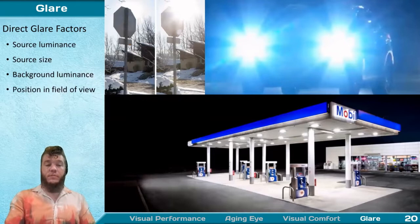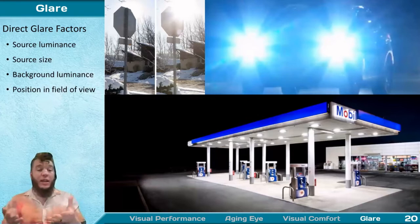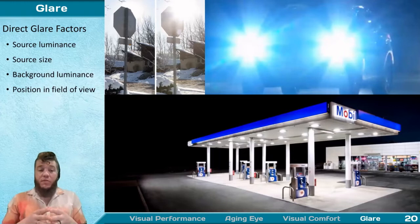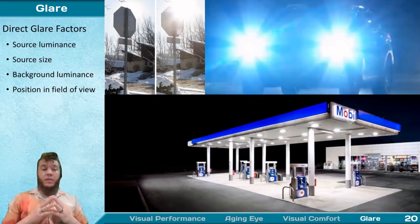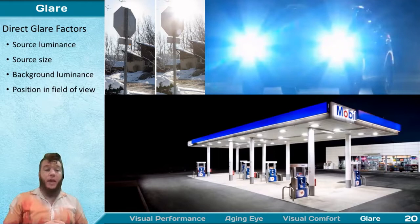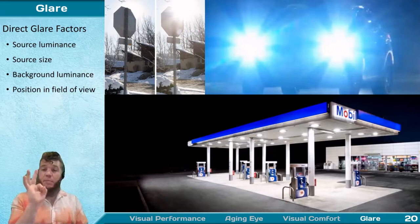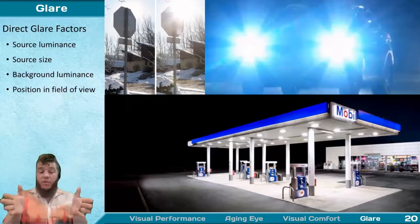Direct glare is one of the cardinal sins of lighting design, which is why we specify luminaires with a variety of shielding devices to prevent direct views of the light source. The factors involved include source luminance, the amount of light directed toward you, and the size of the source — the same luminance from a tiny LED package is much harsher on your vision than from a larger source.